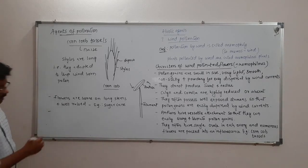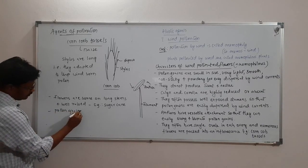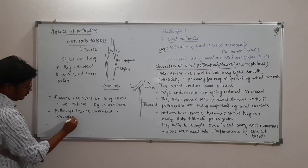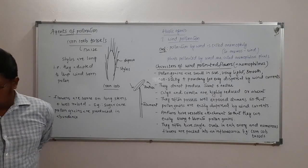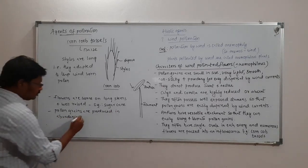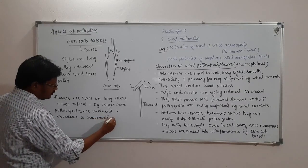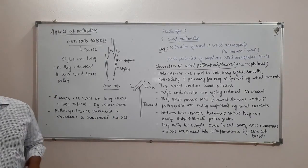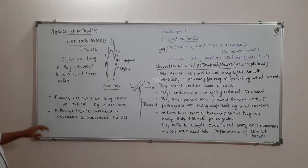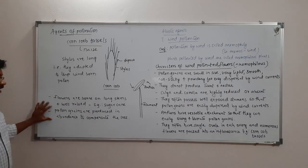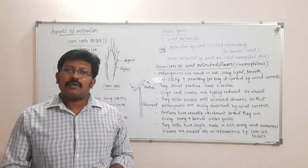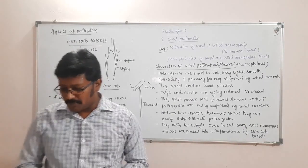Pollen grains are produced in abundance. This is to compensate for the loss — since most pollen grains may never reach their destination, producing a greater number increases the chance that some will reach the stigma of another flower.